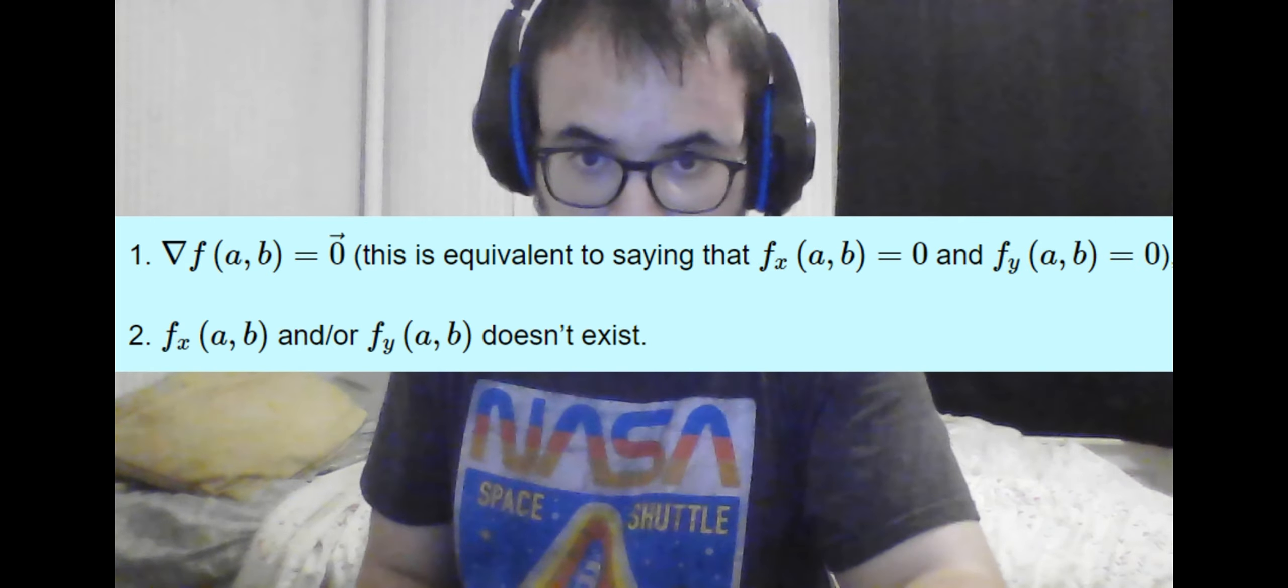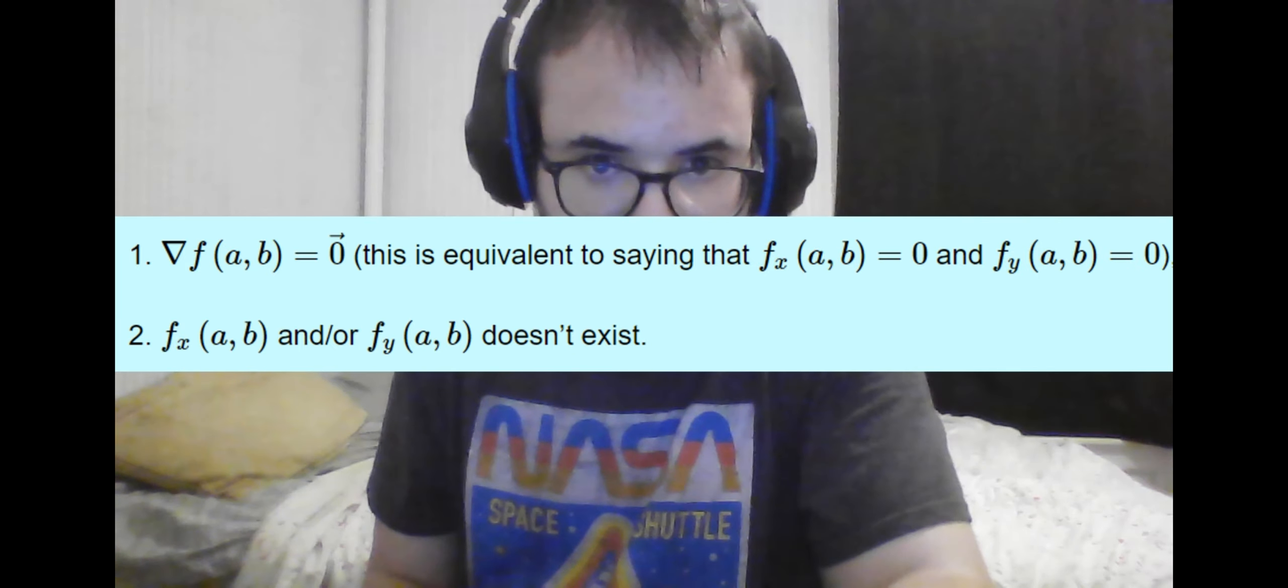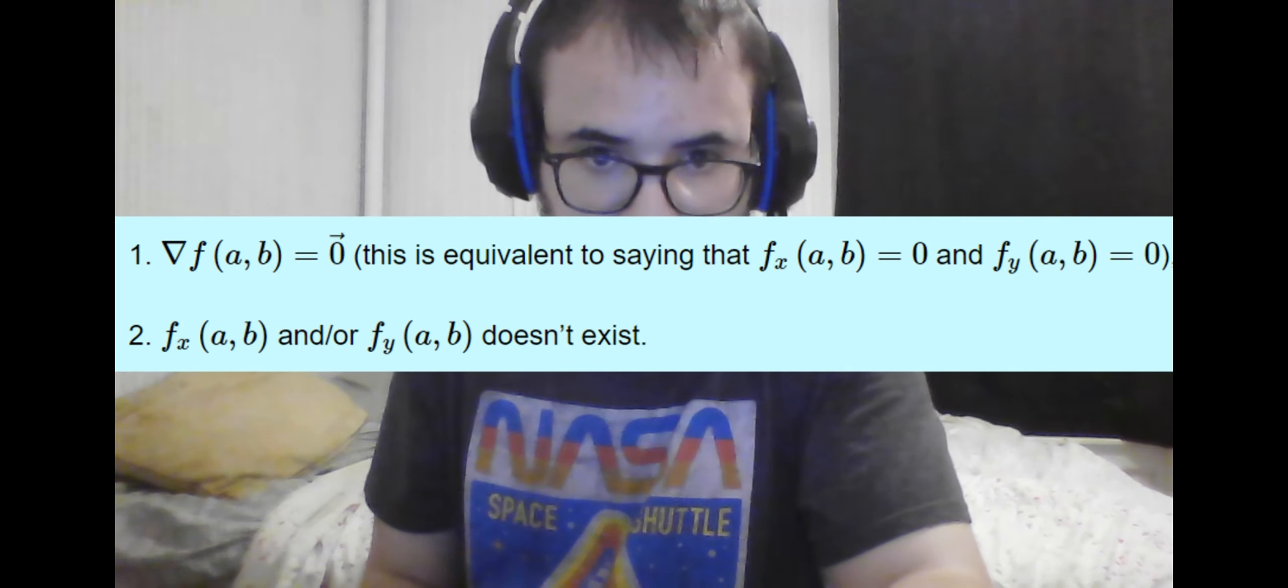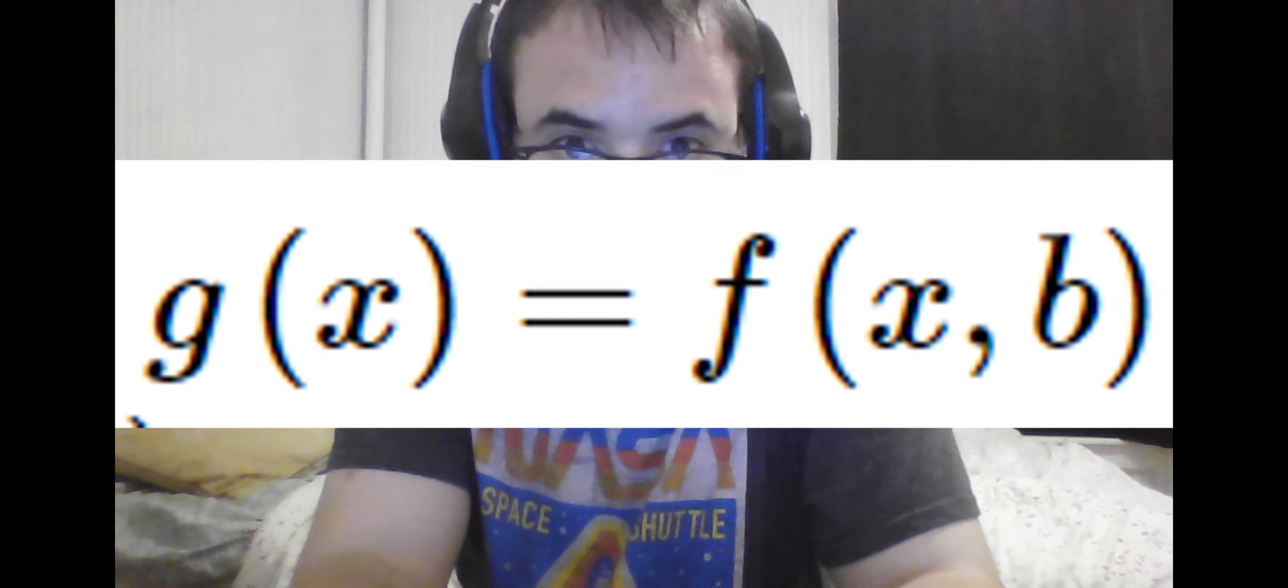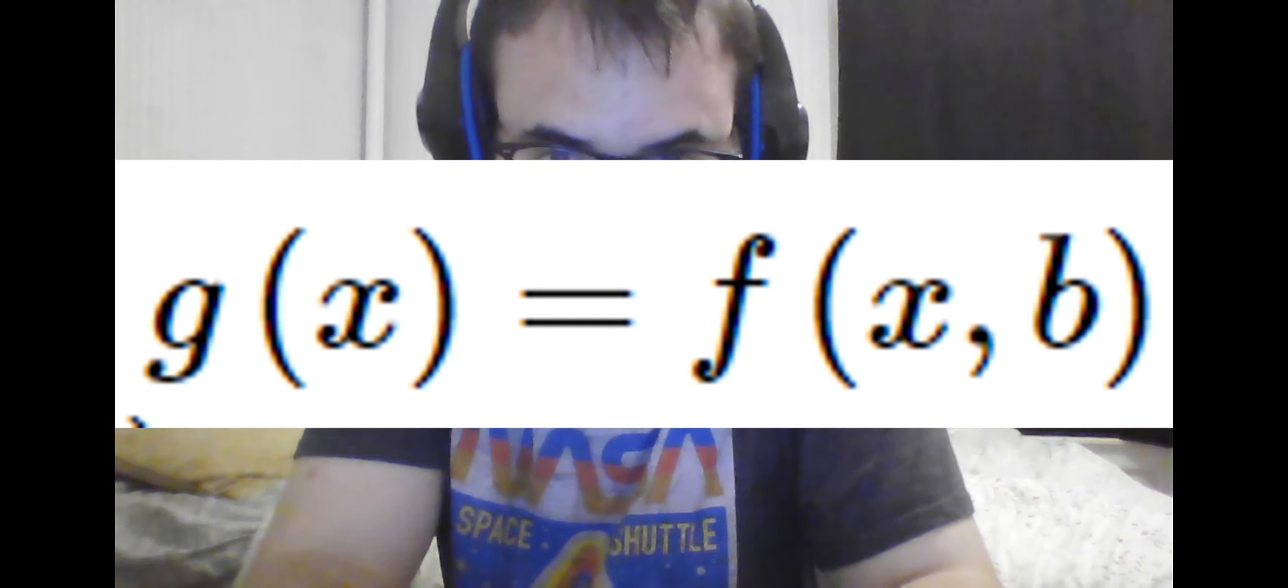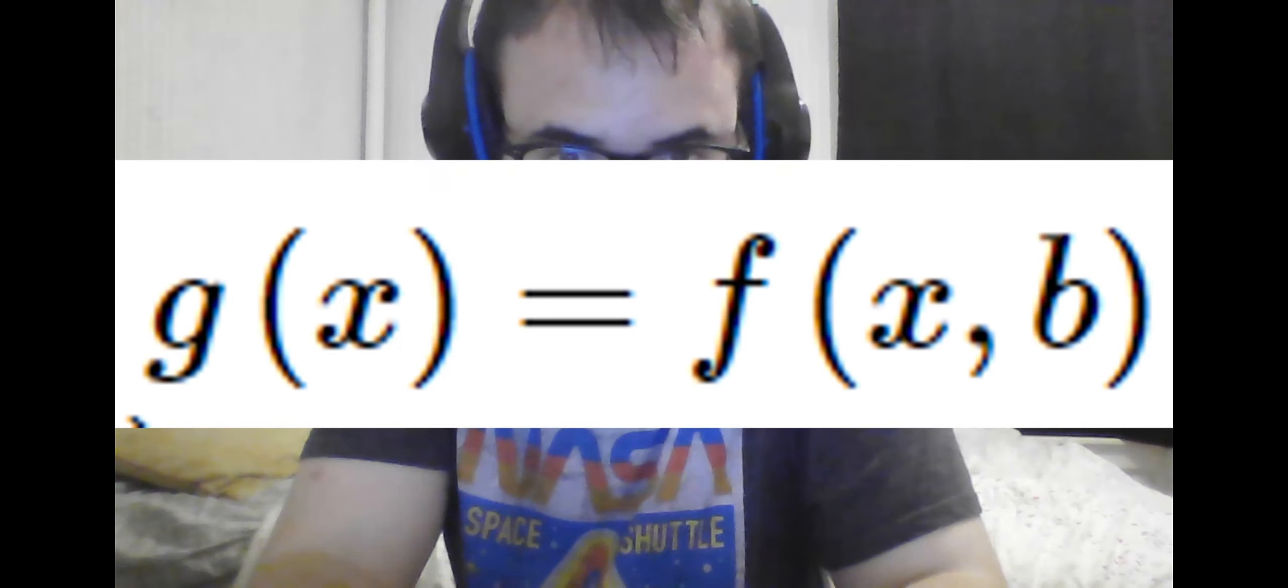We can use Fermat's theorem again for multivariable functions by doing f(x,y) has a relative extrema at (a,b), and seeing that g(x), or the function where y is kept constant, has a relative extrema at x equals a.